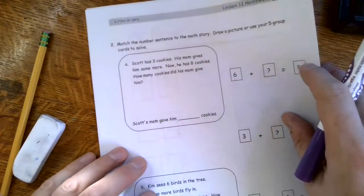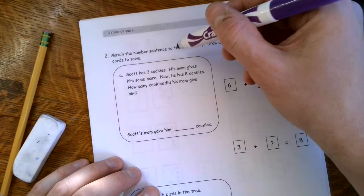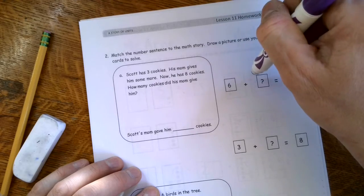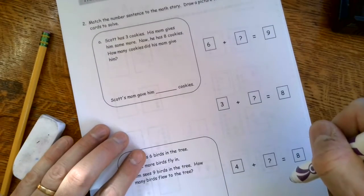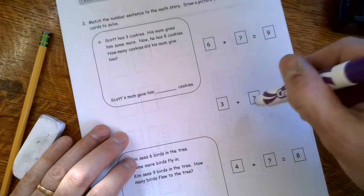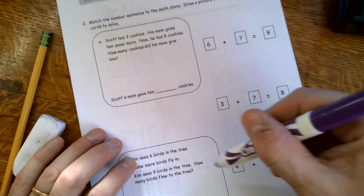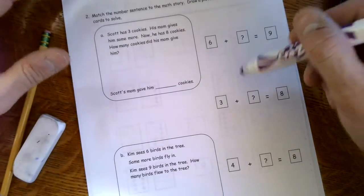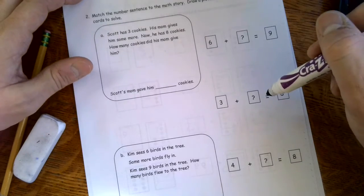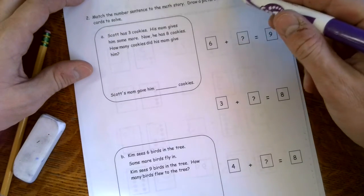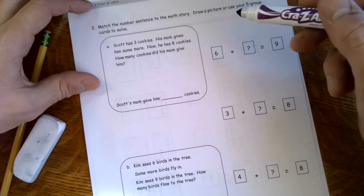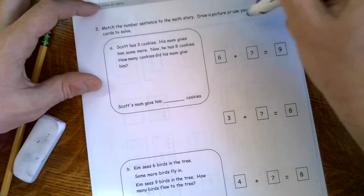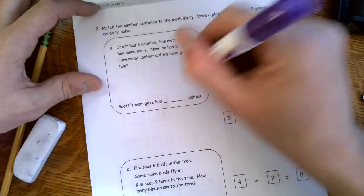Now, the next page says match the number sentence to the math story. Oh, I see. We have some number sentences over here. Oh, they gave us one, two, three sentences, but only two math stories. So one of these is not the right answer. Two of them are. Draw a picture or use your five group cards to solve. Alright, that's the way of saying take some notes here, write some stuff.